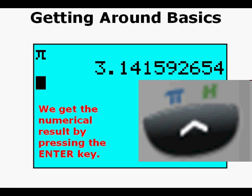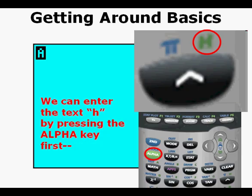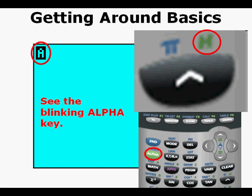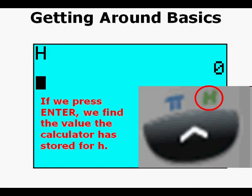We can enter the letter h by first pressing the alpha key at the upper left just below the second key. You should see the blinking alpha cursor key at the upper left of the view screen. Then press the exponent key at the right of the keypad. If we press enter, we find the value the calculator has stored for h. Its current value stored for h is zero on my calculator, but we can change it to another number if we want. But storing a value for a letter is for another lesson.